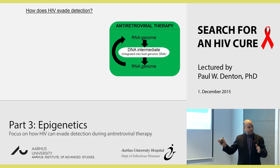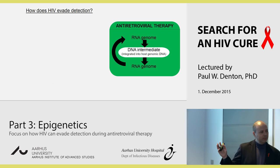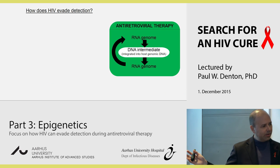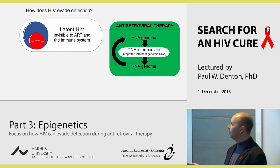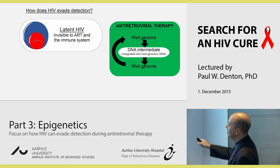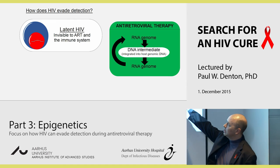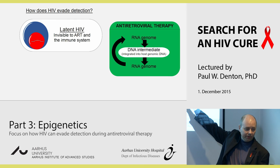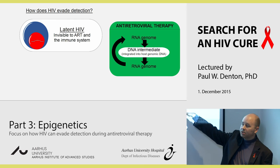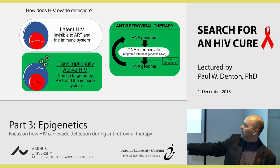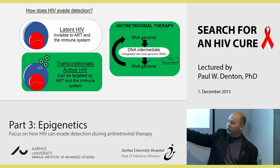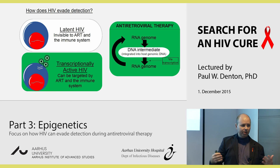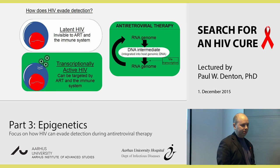Back to the story: we have antiretroviral therapy, and we have latent virus in this white field that's invisible to the immune system. Then we have the transcriptionally active virus, which becomes able to be targeted by our therapies.